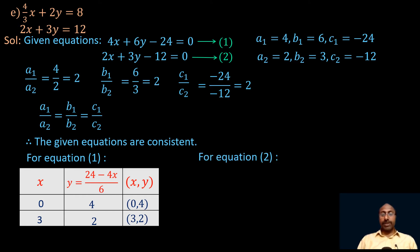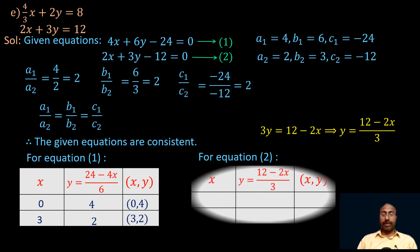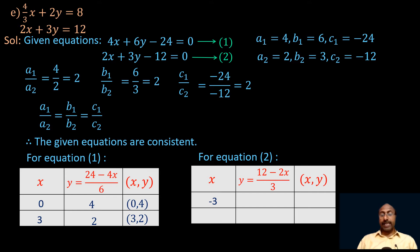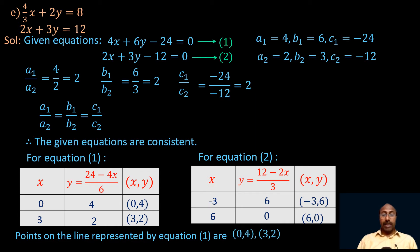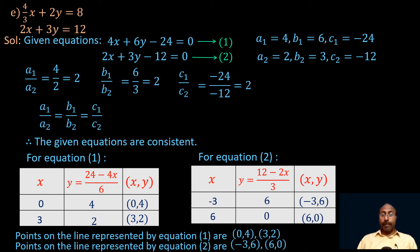Similarly, for equation 2, which is 2x plus 3y minus 12 equals 0, we can write 3y equals 12 minus 2x, giving y equals (12 minus 2x) divided by 3. Taking x equal to minus 3, y equals (12 plus 6) by 3 equals 18 by 3, which is 6. So the point is (minus 3, 6). And if x equals 6, then y equals (12 minus 12) by 3 equals 0. So the point is (6, 0). The points on equation 1's line are (0, 4) and (3, 2), and on equation 2's line are (minus 3, 6) and (6, 0).